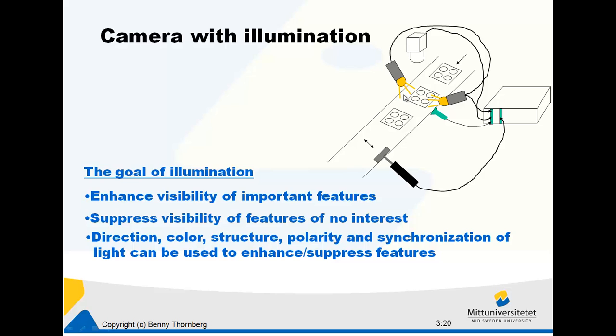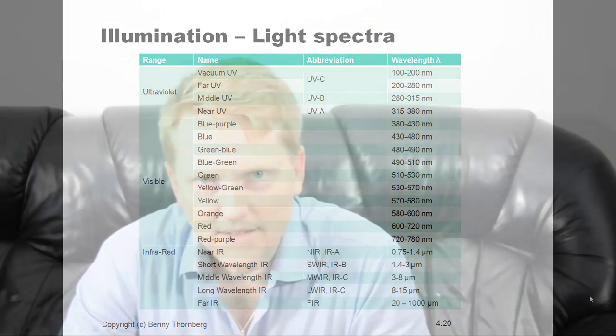We can use the direction, color, structure, polarity, and synchronization of light to enhance and suppress features of interest. Light is electromagnetic radiation and we can view it as a propagation of an electromagnetic wave having a certain wavelength, or we can view it as a stream of particles — photons — where the photons have different energy and the wave propagation has different wavelengths.